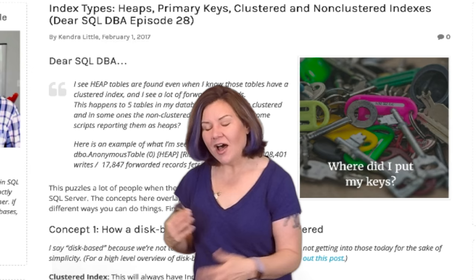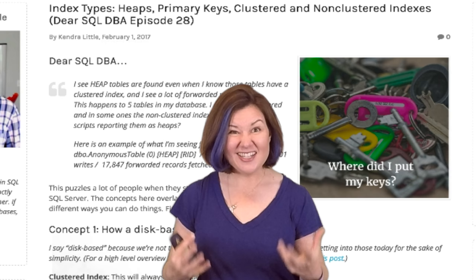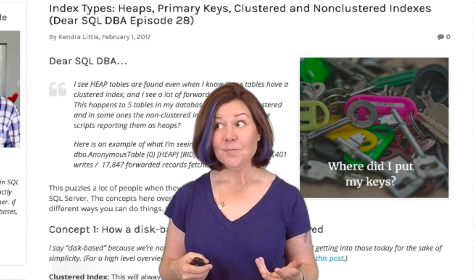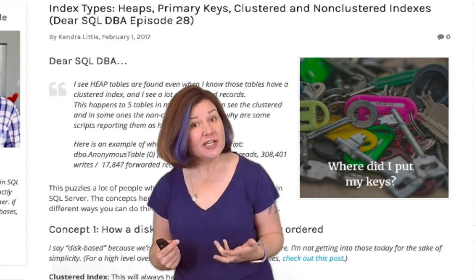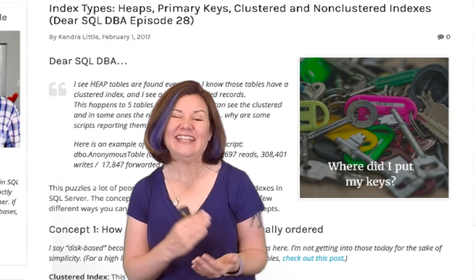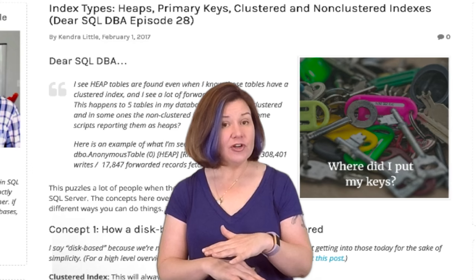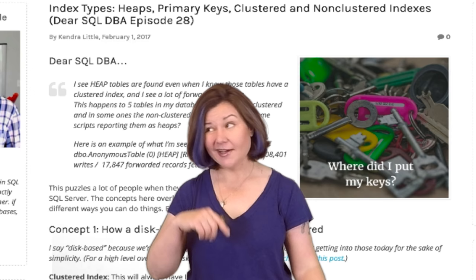When thinking about indexes and keys on disk-based tables, there are really two concepts. The first concept is: how is the data physically ordered? When we create a clustered index on a table, it always has index ID equals 1. Index ID 1 means it's a clustered index. If it's index ID 0, it is not a clustered index. If it's greater than 1, it is also not a clustered index. It always uses 1 for clustered indexes.